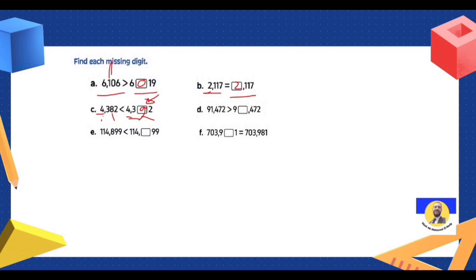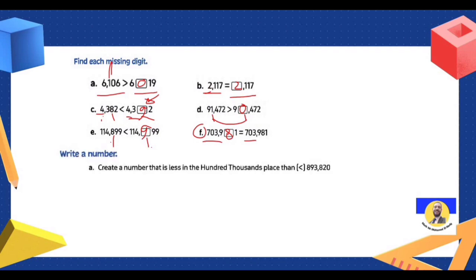Next: in L1, write a digit smaller than this one — smaller than 1 is 0. Next: here it's 800, no digit shown — I want a digit greater than 8, so it will be 9. Letter F: digits at the same, so put here the same as 8.